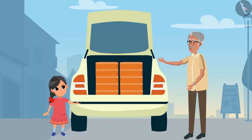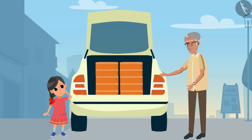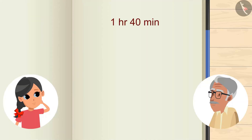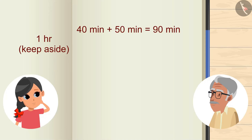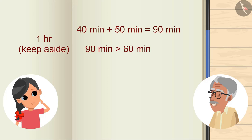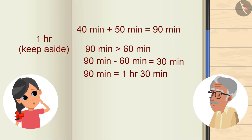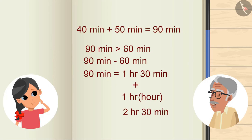Very good. Okay, now a difficult question. Can you add 50 minutes to the previous 1 hour 40 minutes? How can I add this, Grandpa? Let me show you. If we have to add 50 minutes to 1 hour 40 minutes, units of 40 and 50 are both in minutes, so we can add both of them together. 50 plus 40 is 90 minutes, Grandpa. Correct. But is 90 minutes greater than 60 minutes? Yes. So how many hours is this? On subtracting 60 from 90 minutes, we will get 30. So 1 hour 30 minutes. Very good. Now add this 1 hour 30 minutes to previous 1 hour. So now we get 2 hours 30 minutes.